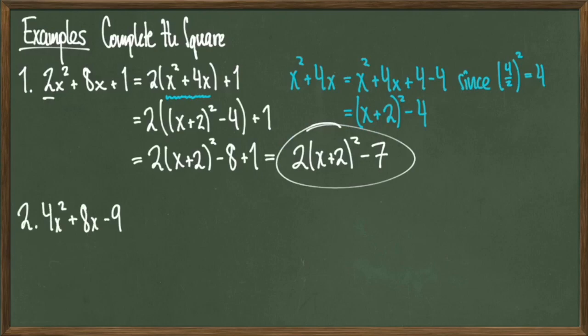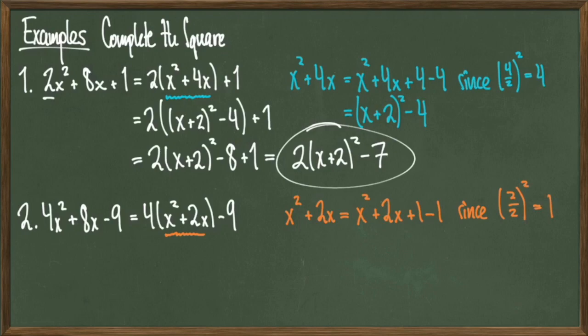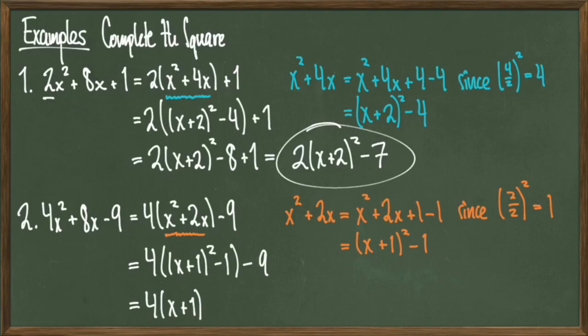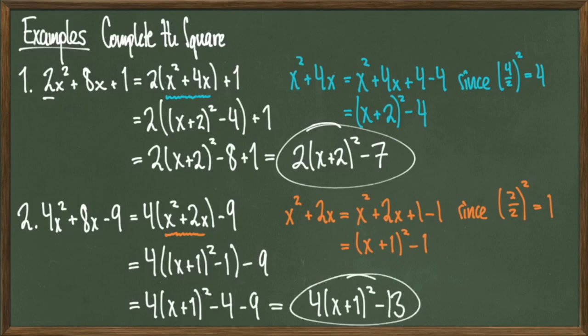Let's do one more example. Complete the square of the polynomial 4x² + 8x - 9. I'll identify 4 as a, and I'll factor it out from 4x² and 8x, leaving behind x² + 2x. Now I will complete the square on x² + 2x, which when I run through the steps, give me x² + 2x + 1 - 1, which lands me at (x + 1)² - 1. After I make this substitution, I can simplify the statement 4[(x + 1)² - 1] - 9, down to 4(x + 1)² - 4 - 9, giving me a final answer of 4(x + 1)² - 13.